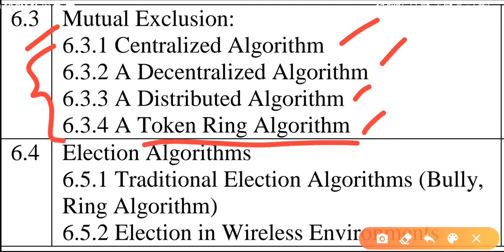So this is all about the token ring algorithm — a very easy concept. You can search on the net or read a book to understand it easily. If you have any problems, please feel free to comment. Thanks for watching, bye!